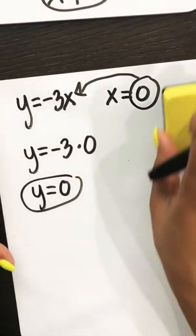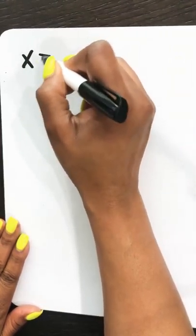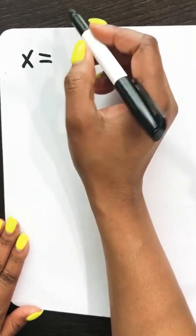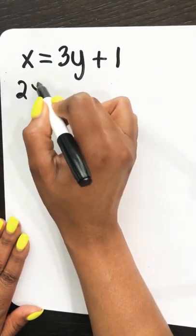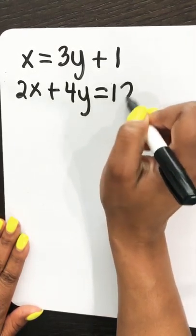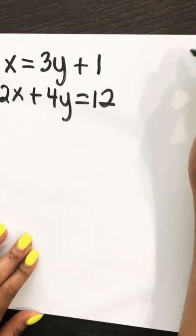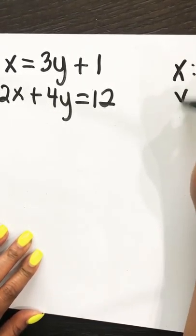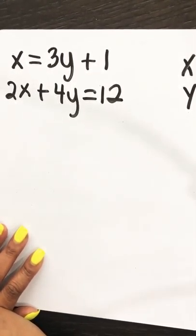For another example, we're again using substitution. We start with the equations x equals 3y plus 1, and 2x plus 4y equals 12. We have two equations — a system of equations — and our goal is to find x and to find y. We can start off by doing some substitution.